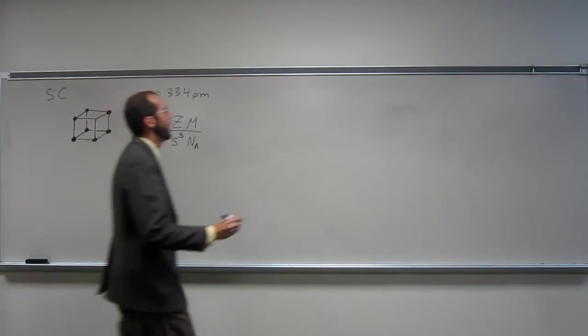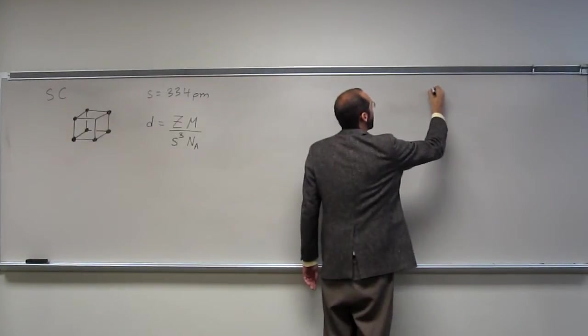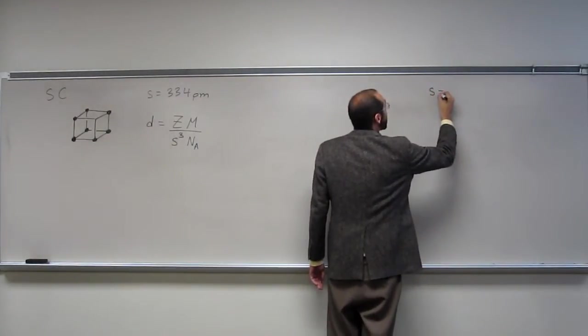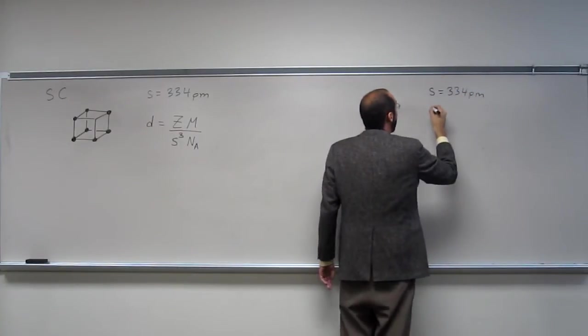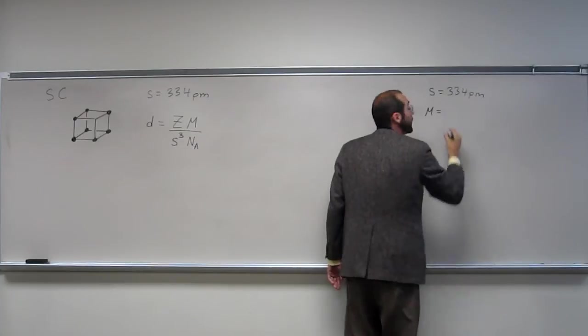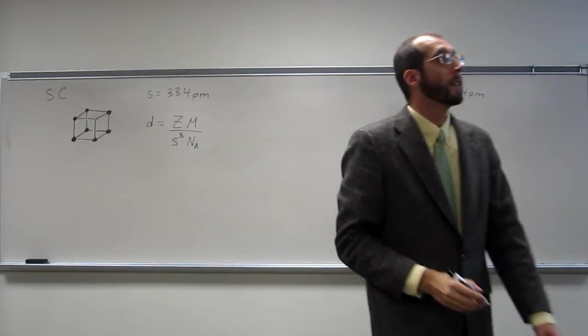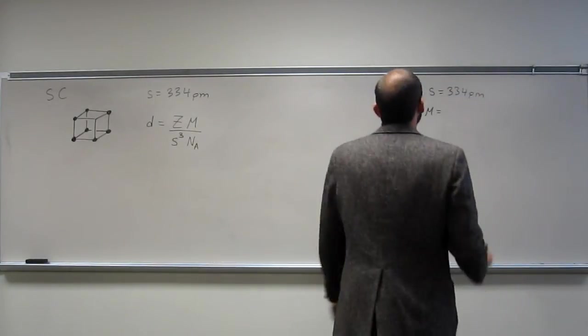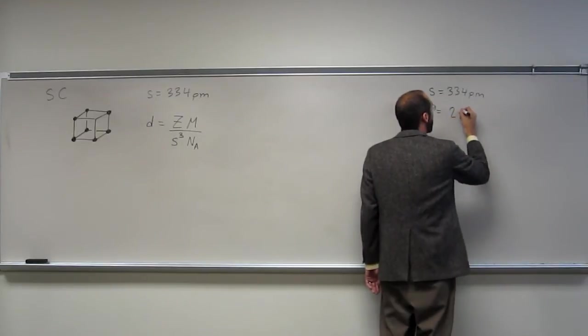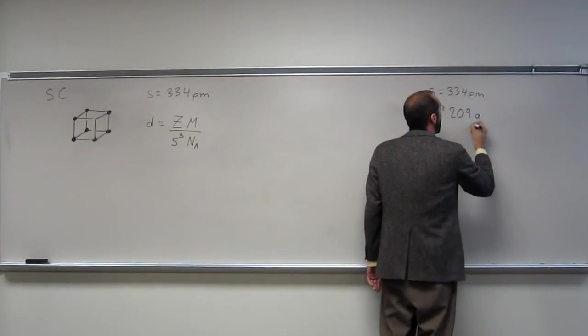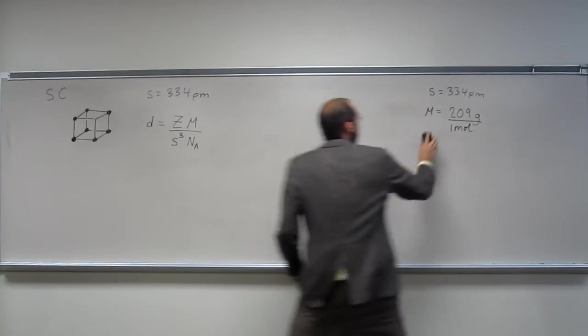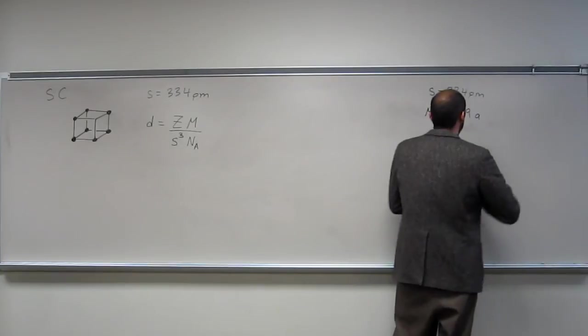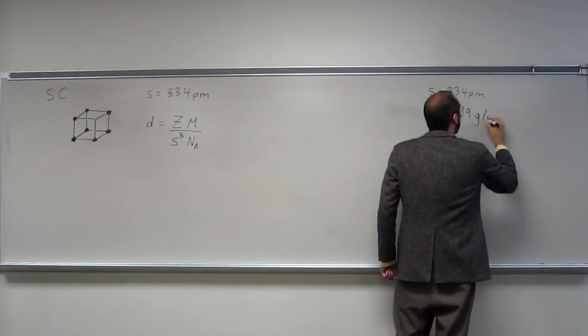So, polonium, the polonium atom, its side is 334 picometers. So, we've got that. Molar mass is 209, right? So, 209 grams per mole. I'll do that in a second. Let's write it out the way you might see it in the problem.